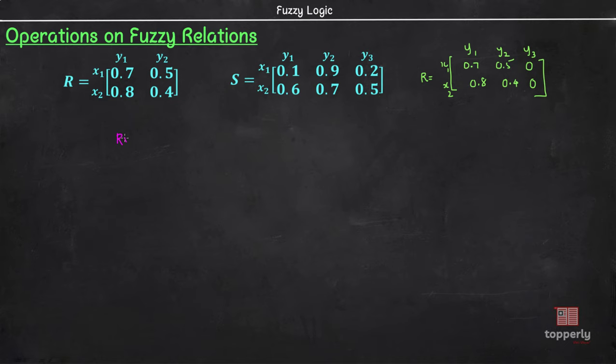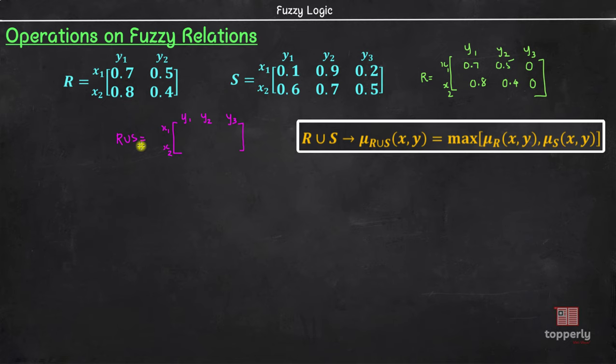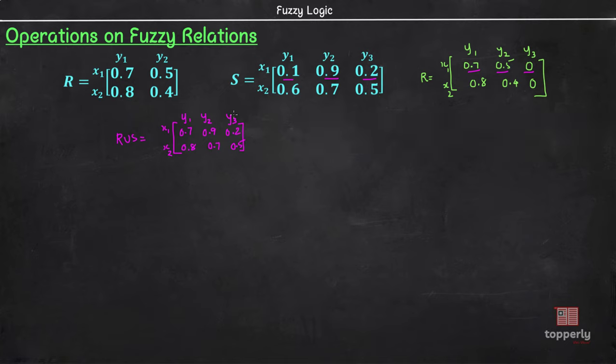Now, R union S is given by x1, x2, y1, y2, y3 and the membership value of ordered pair x1, y1 in R union S is given by maximum of 0.7 and 0.1 which is 0.7. Similarly, for x1, y2, the maximum of 0.5 and 0.9 is 0.9. For x1, y3, the maximum of 0 and 0.2 is 0.2, and similarly, we can write 0.8, 0.7 and 0.5. So, this is R union S. For union operation, we simply have to find out the maximum of corresponding membership values in both the relations.